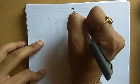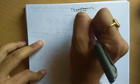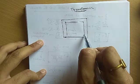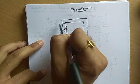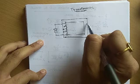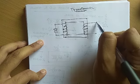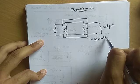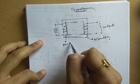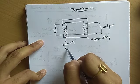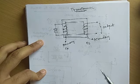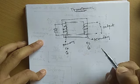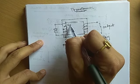Now let's look at transformer theory. A transformer has a soft iron core with two coils — a primary coil connected to an input source, and a secondary coil providing output. The EMF across the primary is EP, across the secondary is ES. Current in the primary is IP, in the secondary is IS. Number of turns in primary is NP and in secondary is NS.